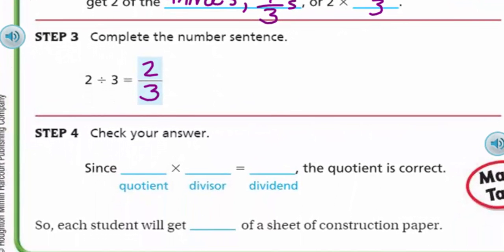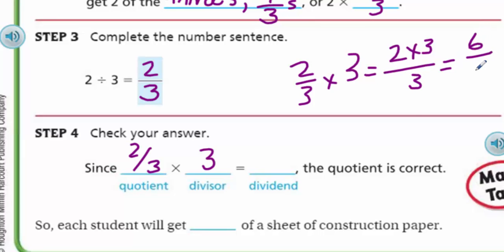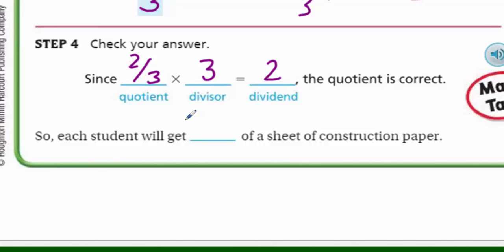Check your answer. It says that we can take the quotient, which we know now since that's our answer to a division problem. We can put two-thirds here. If we multiply that by the divisor, that was three. Two over three times three is the same as two times three over three, which is equal to six over three. Six divided by three is equal to two. Was our dividend two? It was. So, the quotient is correct. So each student will get two-thirds of a sheet of construction paper.